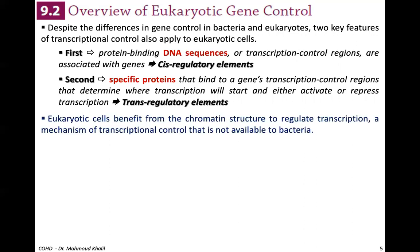Eukaryotic cells benefit from chromatin structure to regulate transcription — a mechanism not available to bacteria, which need to respond fast to environmental changes. In eukaryotic cells, the chromatin is condensed. Once there is an order to express a certain set of genes, the chromatin must first be decondensed to expose the DNA for transcription. Without this chromatin mechanism, bacteria can do fast regulation. Otherwise, the bacteria would die.